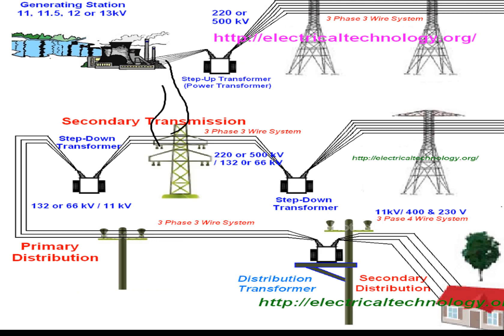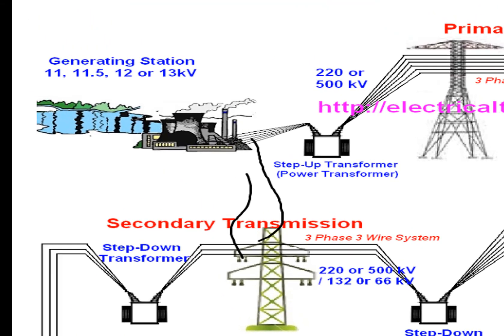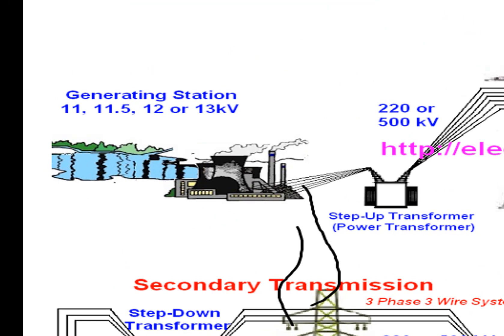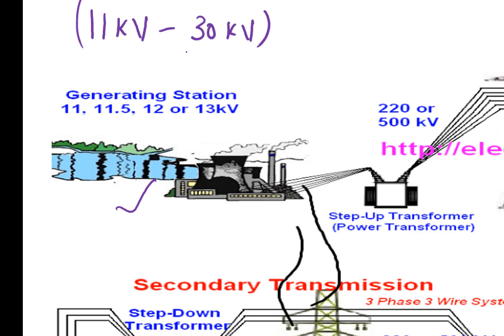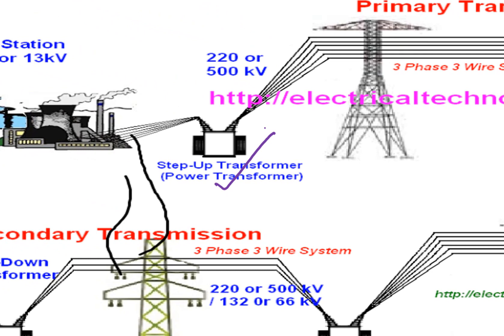To understand vaguely how the power system works: electrical energy is generated at generating stations. The generation voltage is usually from 11 kV to 30 kV. After generation, there is a step-up transformer which steps up the voltage from that lower voltage to a higher voltage, usually in the range of 200 to 500 kV.